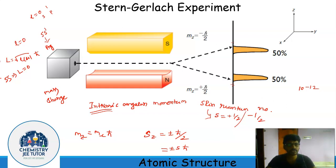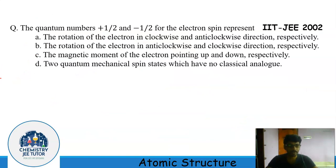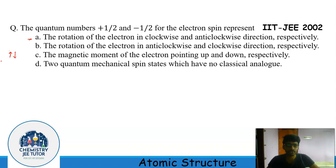In this context, in the IIT JEE 2002 exam, one question was asked: what is the significance of +½ and −½ for the electron spin? The options included rotation of the electron around clockwise and anticlockwise directions respectively — which some books state, but it is not true. The correct answer is that +½ and −½ of the electron spin represent two quantum mechanical spin states which have no classical meaning.